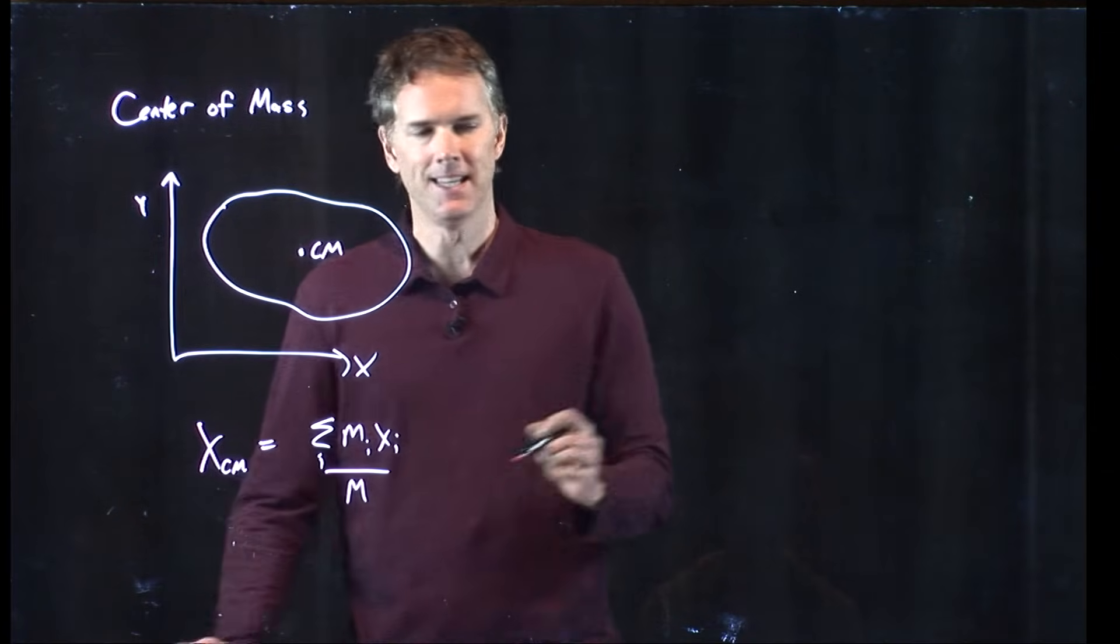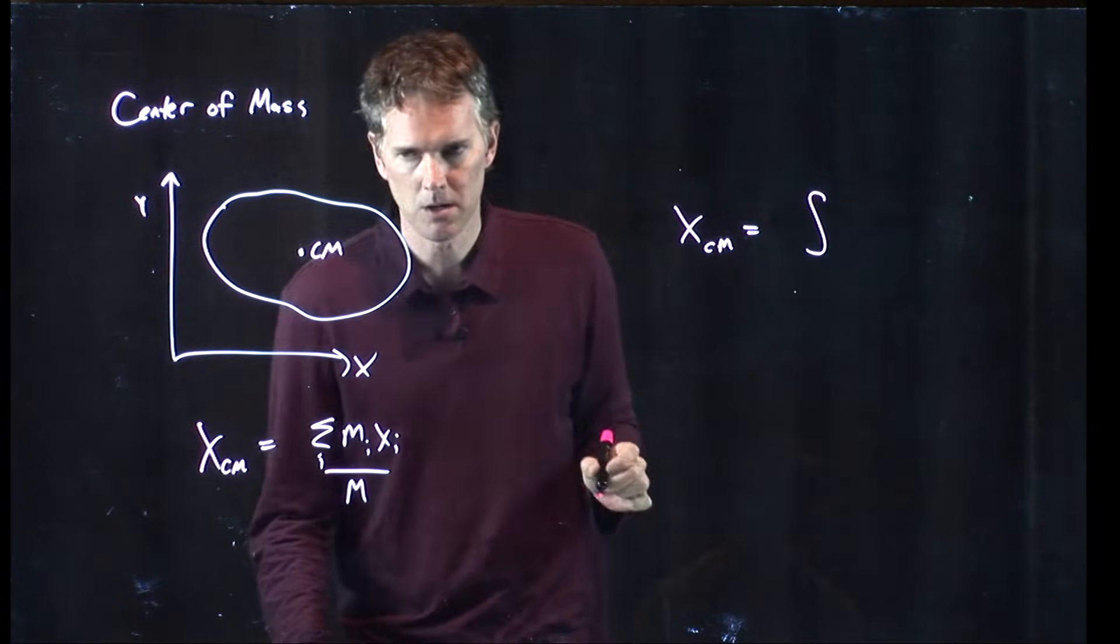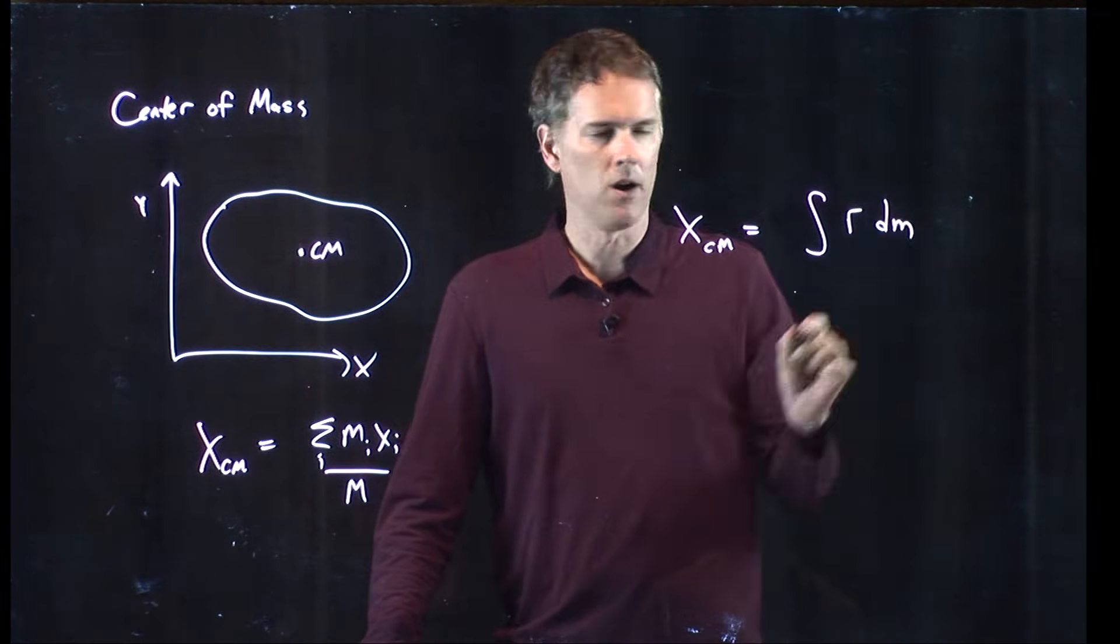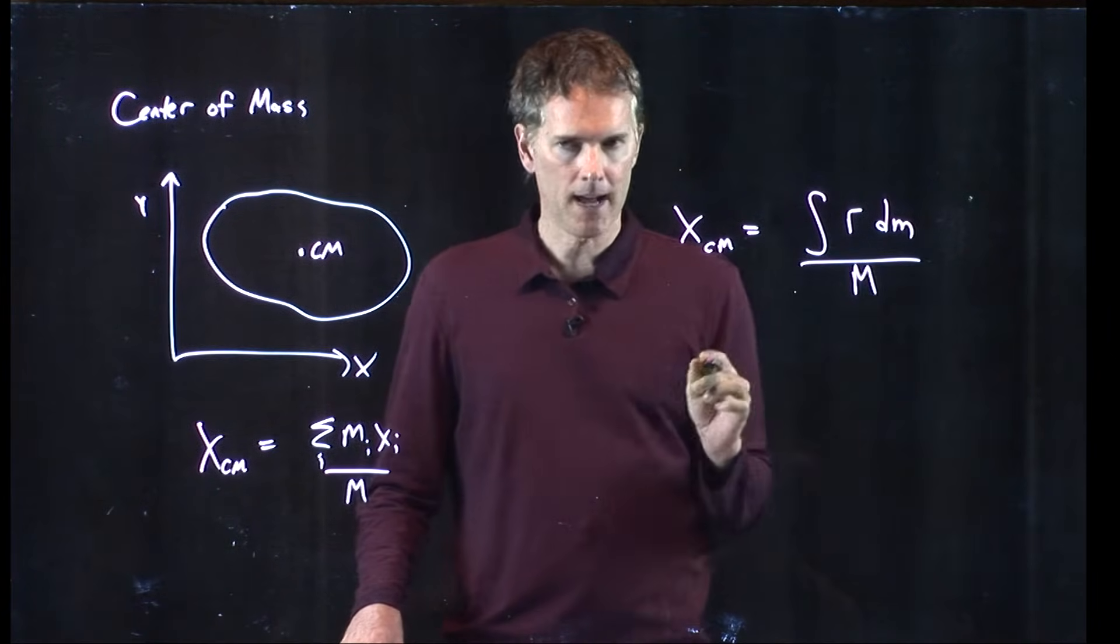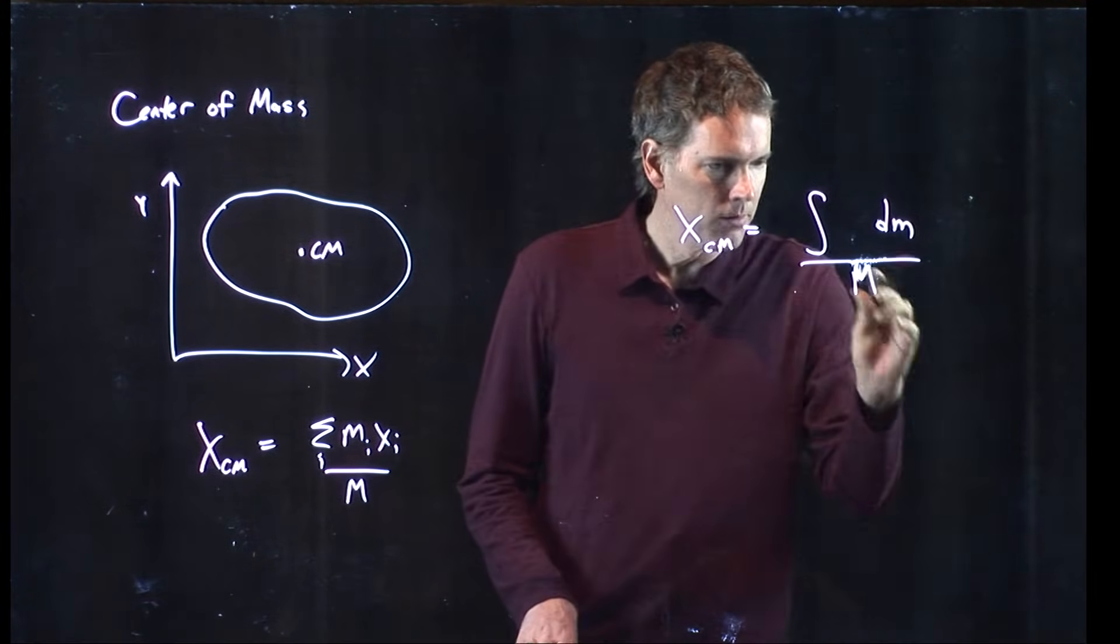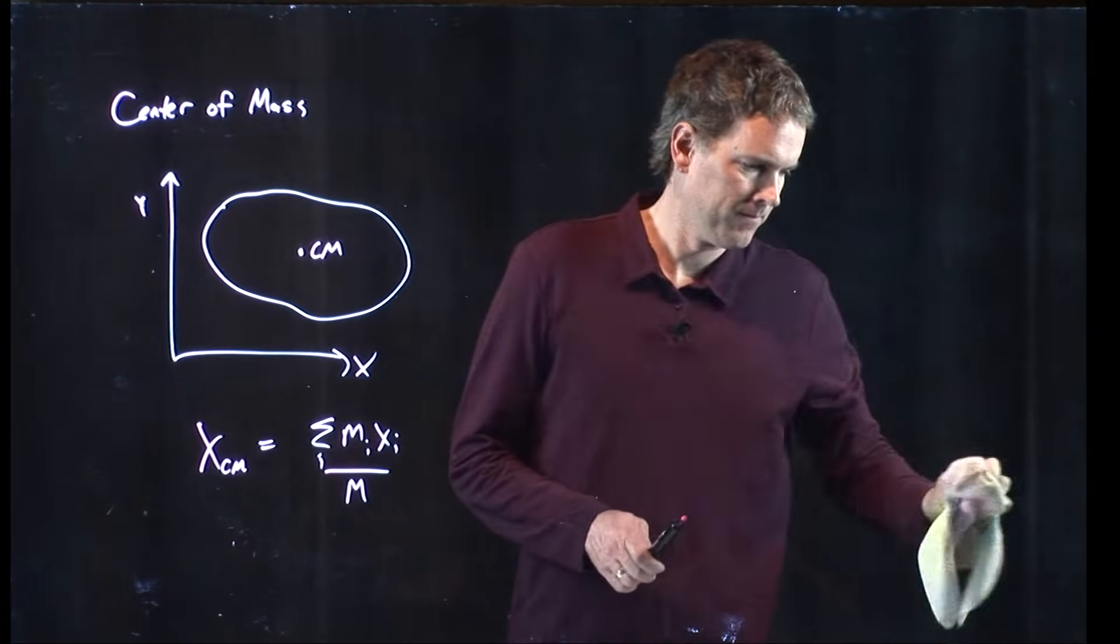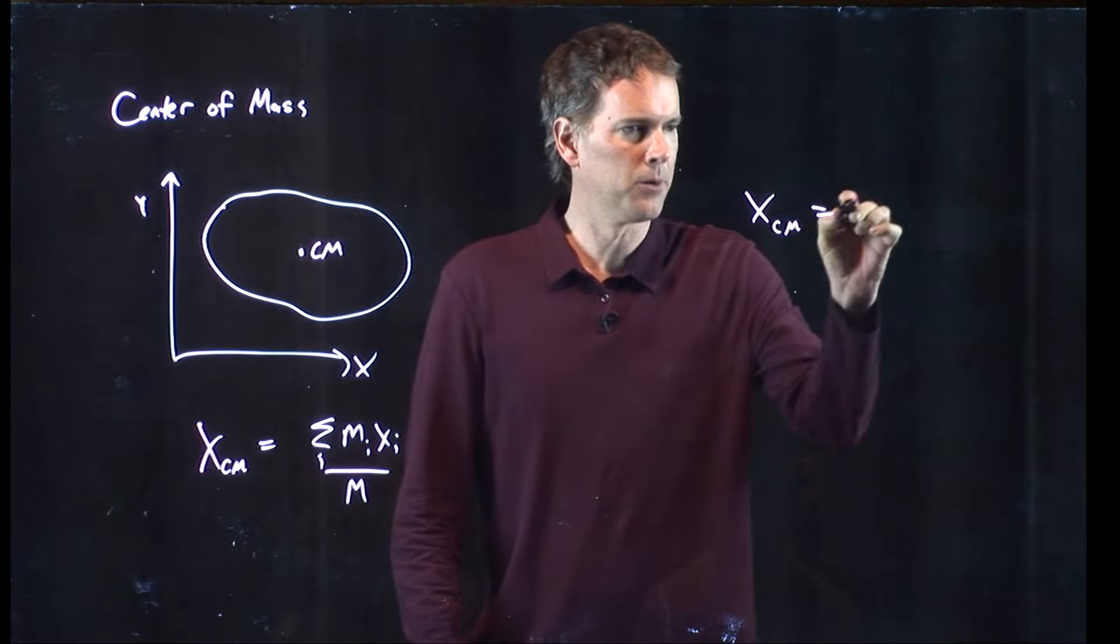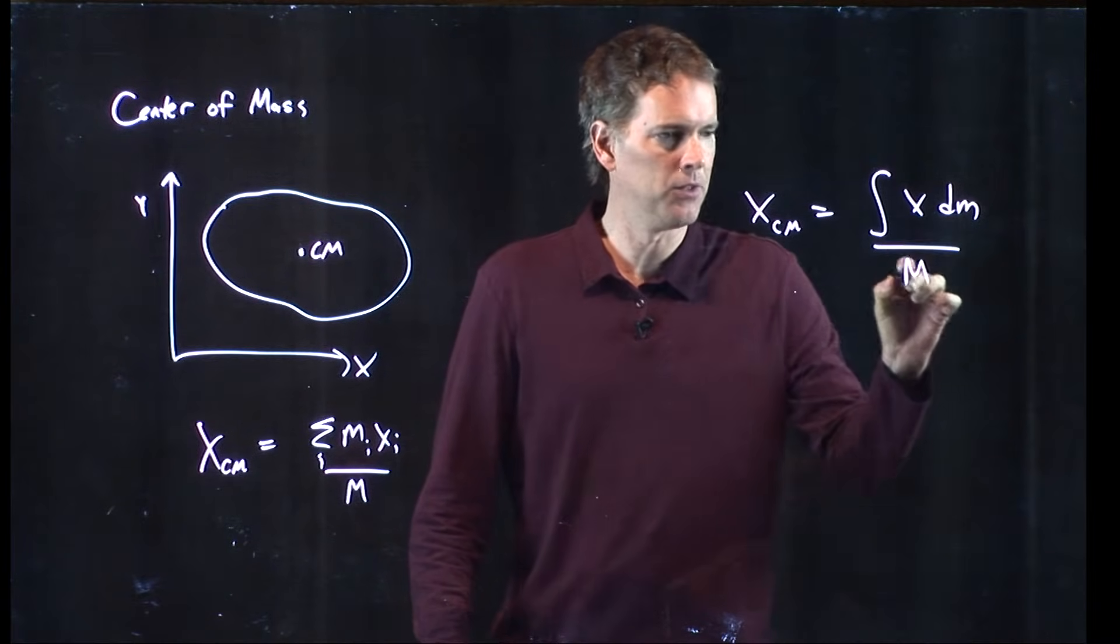m becomes dm. The summation becomes an integral. R is what we call x. The bottom is still total mass. So, let's write it now with an integral. It's x dm divided by the total mass.